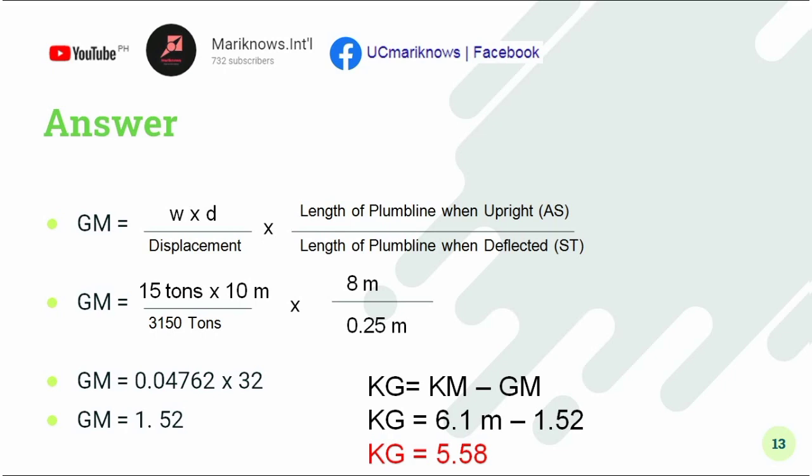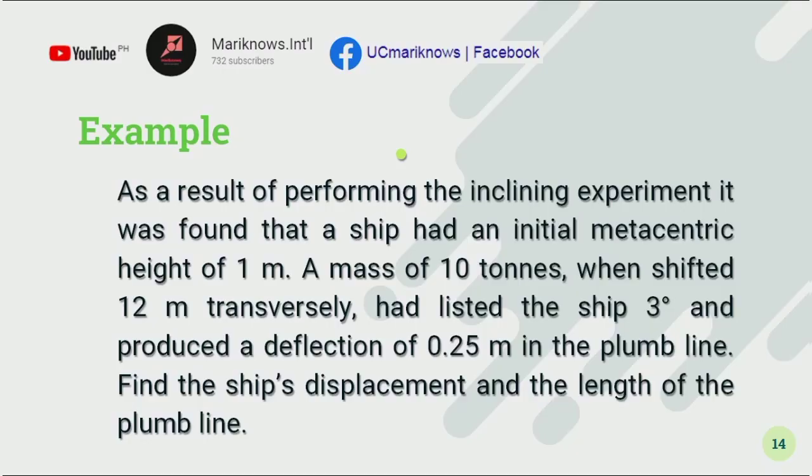Since we now have GM, we can obtain the value of KG by subtracting GM from the given light ship KM of 6.1 meters. Therefore, the light ship KG equals 6.1 minus 1.52, which is 5.58 meters. The unit of measurement is meters.